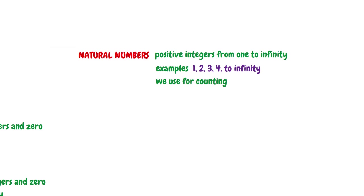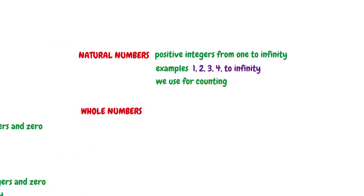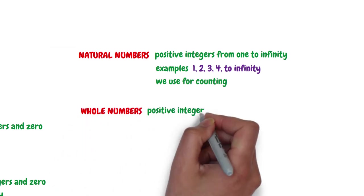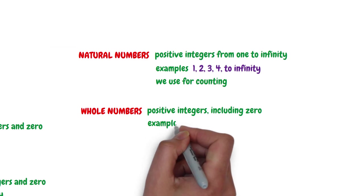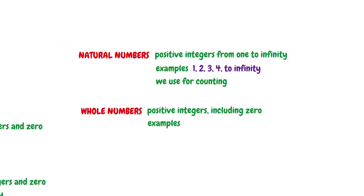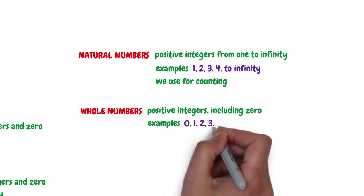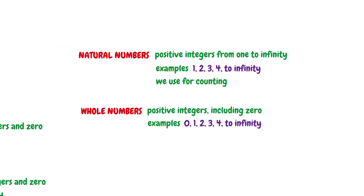The fifth set of numbers is the whole numbers. Whole numbers are positive integers, including 0. Examples of whole numbers include 0, 1, 2, 3, 4, to infinity.